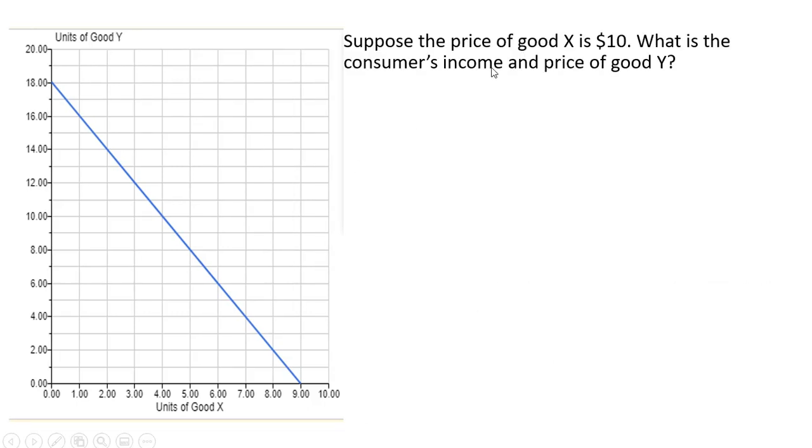Next problem. Suppose the price of good X is $10. What is the consumer's income and price of good Y? The income can be calculated as the price of good X, which is $10, multiplied by the horizontal intercept, which gives us $90.